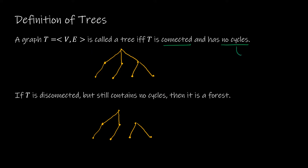Another way to say this is that there is a unique path from each vertex to another vertex. For instance, if I want to get from A to F, the only way to get there is to travel to B and then to F. Now if I were to create a cycle, I could get to F by traveling down to C, then down to D, and then over to F.